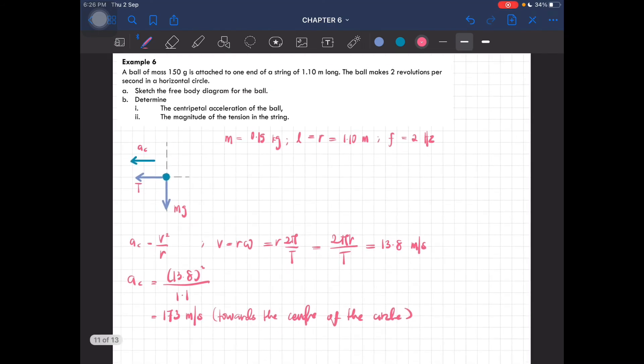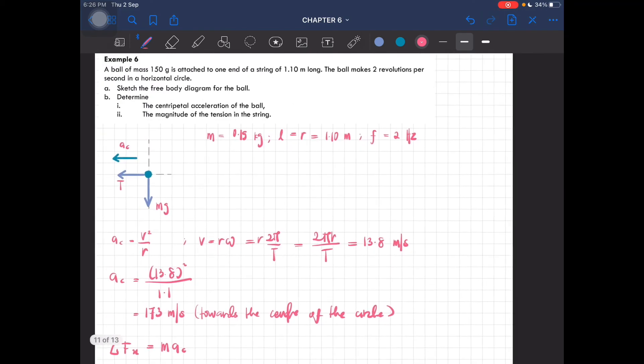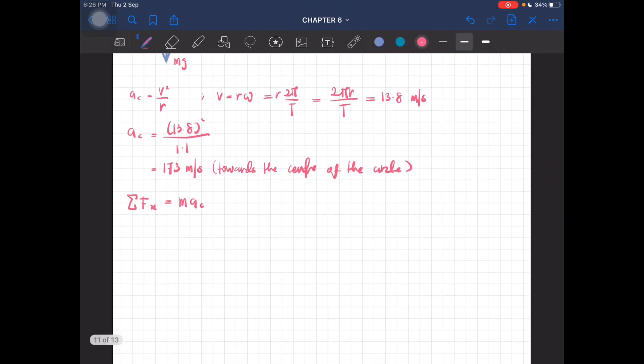Part two, we have to find the magnitude of the tension in the string. So the magnitude of the tension in this string can be calculated using the x component, which is equal to m times ac, where the total force at the x component is just the tension. So tension is equal to m times ac.